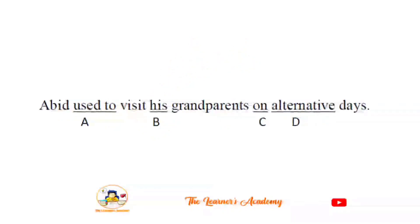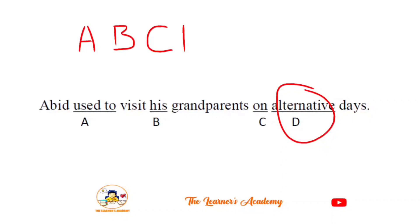Sentence: 'Abid used to visit his grandparents on alternative days.' The error here is the word 'alternative.' 'Alternative' means a choice between options (like option A, B, C, or D). The correct word is 'alternate,' which means every other day. So the corrected sentence is: 'Abid used to visit his grandparents on alternate days.' These two words have distinctly different meanings.